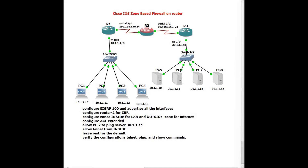In this video we will see only the configuration — how to configure in a simulation. We are using GNS3. First we have to configure EIGRP and advertise all the directly connected interfaces. After that we configure on Router 2 the zone-based firewall with two zones: inside for the PCs and outside for the server. Then we configure some ACLs.